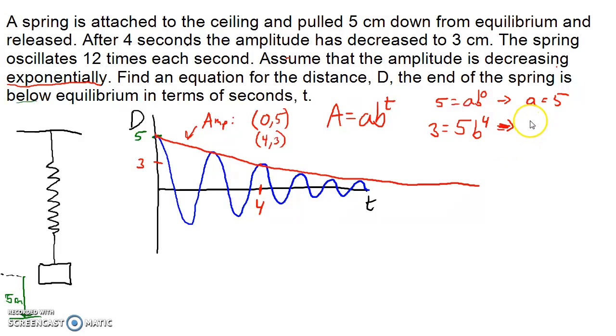So b^4 is equal to, we'll divide both sides by 5, is 3/5. So b is the fourth root of 3/5. You could come up with a decimal value if you wanted, but I'm not going to really worry about that here. So now we have amplitude equals 5 times the fourth root of 3/5 to the t. So that's an equation describing my amplitude.